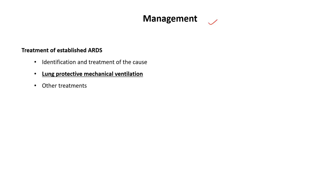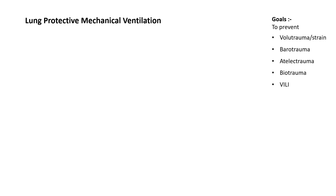When managing such patients, identify and treat the cause of ARDS — for example, urosepsis or acute pancreatitis. The most important aspect is lung-protective mechanical ventilation along with other adjunctive treatments. Lung-protective ventilation protects the lung from volutrauma, barotrauma, atelectrauma, and biotrauma, ultimately reducing ventilator-induced lung injury.